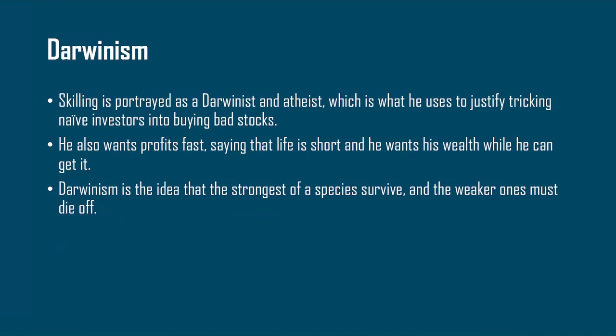Darwinism is another important theme, obviously taken from Charles Darwin's survival of the fittest. Skilling is portrayed as a Darwinist and atheist, which is what he uses to justify tricking naive investors into buying bad stocks. In the wild west of business, from his perspective, it is the weakest — those who don't know enough — who will not survive, while he can survive as a result. He also wants profit very quickly, saying life is short and he wants his wealth while he can get it. Ironically, Enron itself eventually becomes one of the weakest species and dies as a company.